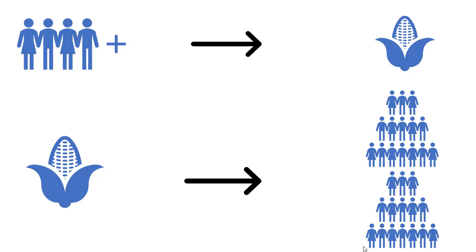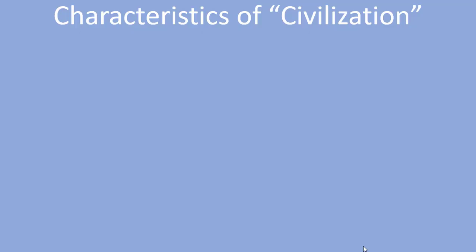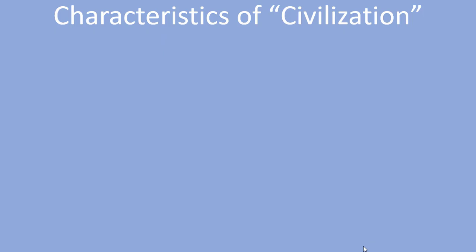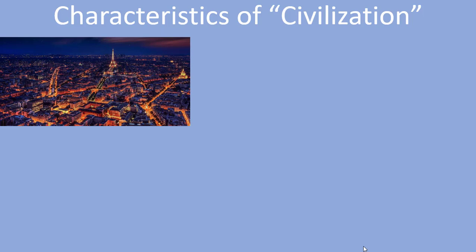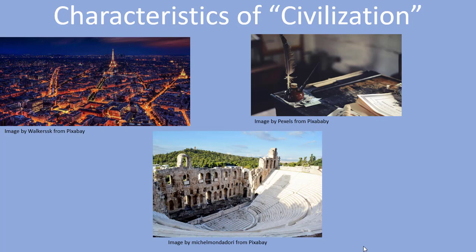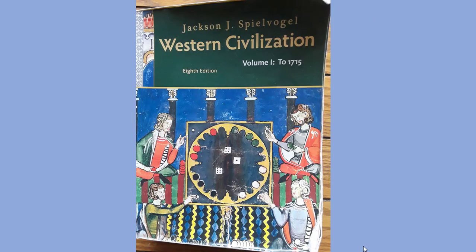Around this time in human history, the characteristics of civilization began to appear: the existence of political, religious, and social structures, along with an urban focus, the evolution of cultural and intellectual pursuits, and writing. We should discuss the phrase 'western civilization' and break down what that term means. Historian Jackson Spielvogel argues that these six characteristics are what many historians agree are the hallmarks of what a civilization is.